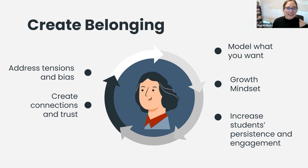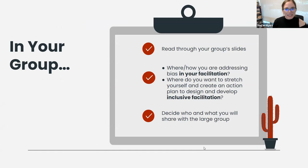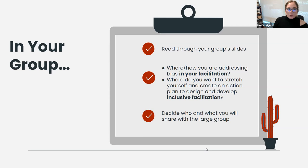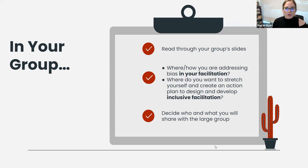We're going to get you back into your groups. The Red Cactus group is going to look at warm and wise feedback. The Yellow Tree group is going to look at the Raven approach — by Dr. Frank Harris and Dr. Luke Wood, which is one of my favorites. The Pink Flower group is going to look at the Peralta online equity rubric again and discuss best practices and aligned examples.